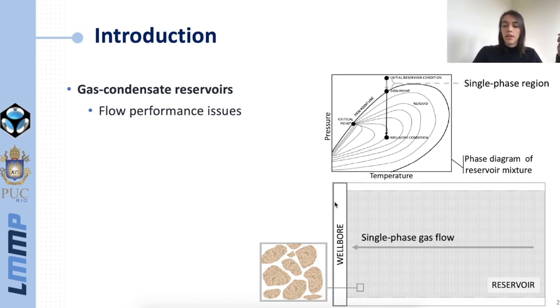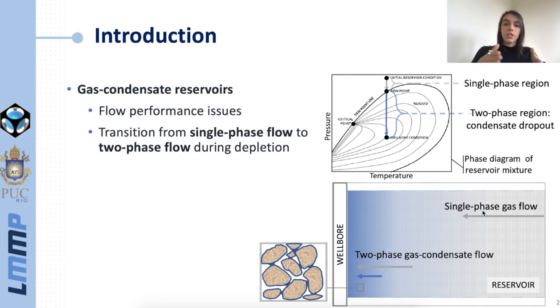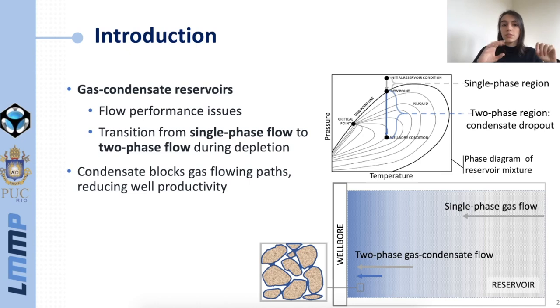However at lower pressures we enter the two phase region where condensate dropout takes place. What happens in the reservoir is that far from the well we still may have single phase gas flow, however close to the wellbore we shift to a two phase gas condensate flow. This is a problem because the condensate blocks many of the gas flowing paths and reduces the well productivity in a phenomenon known as condensate blockage.